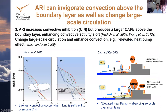However, ARI is also found to invigorate convection above the boundary layer. Heating at the top of the boundary layer increases the cap above it but also increases the CAPE. So when the lifting is large enough to open the cap, we will have stronger convection. ARI is also found to change large-scale circulation and enhance convection. One example is the elevated heat pump effect — when we have absorbing aerosols like black carbon over high-terrain regions, this enhances the circulation and transports moisture into the mountain region, driving high convection.